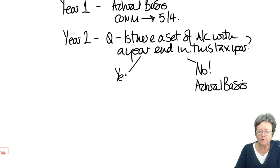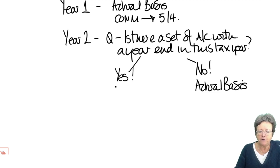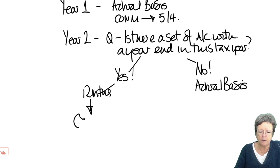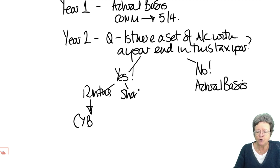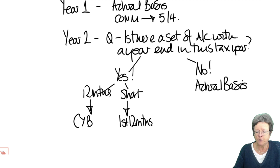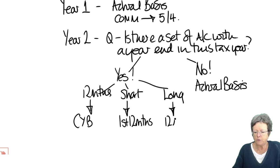If the answer is yes and there is a set of accounts, is it 12 months long? In which case the rule is a current year basis. If it's short — less than 12 months — then the rule is the first 12 months of profits. And if it's long — more than 12 months — then it's 12 months to the year-end.